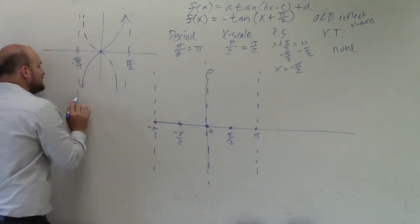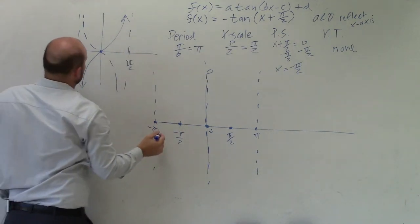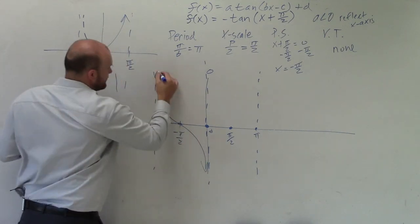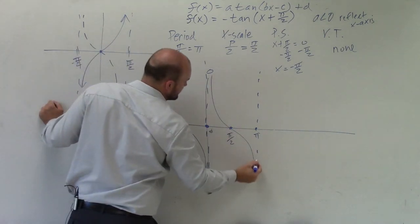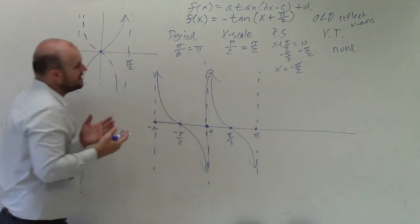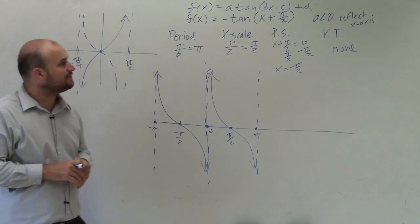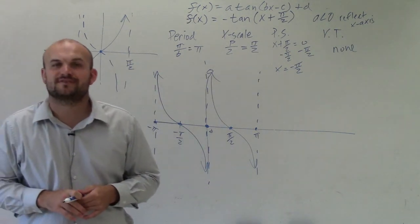So now, instead of my graph falling to the left, rising to the right, it's now going to rise to the left, fall to the right. Rise to the left, fall to the right. And there you go, ladies and gentlemen. That is your tangent graph with a reflection, as well as a phase shift. Thanks.